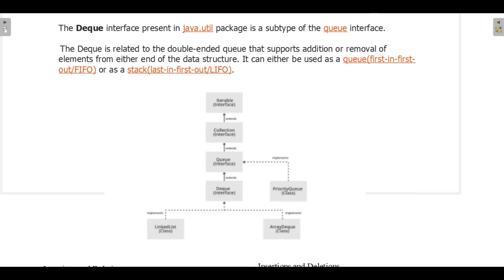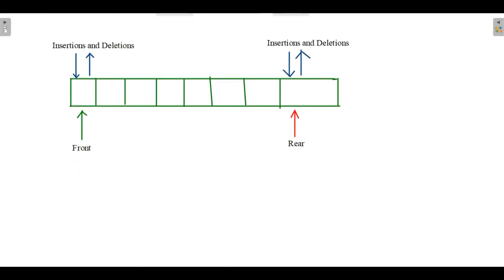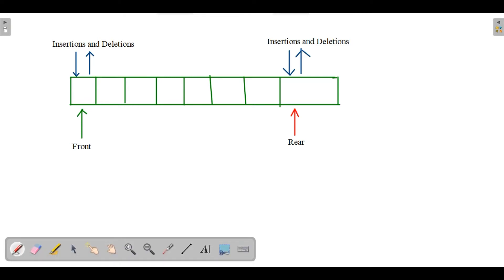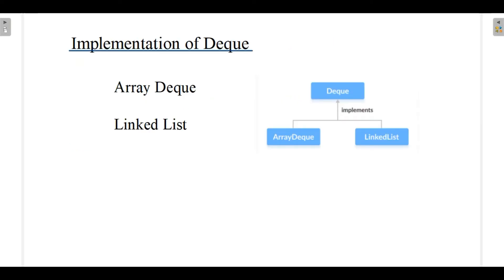Deque is not restricted to just one end — we can add elements at the beginning as well as remove elements from the starting or ending position. We are not restricted to deletions from the front and insertions from the rear as was the case with Queue. The implementation of Deque is provided by two classes: ArrayDeque and LinkedList.